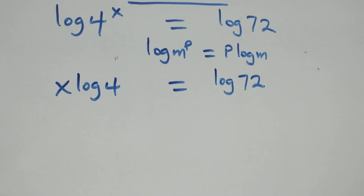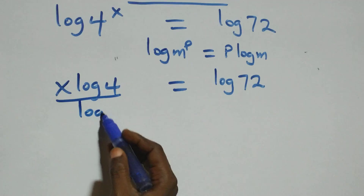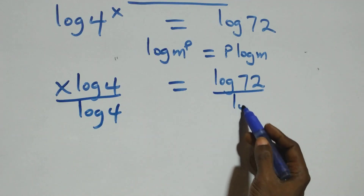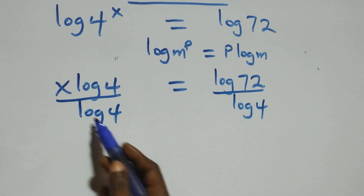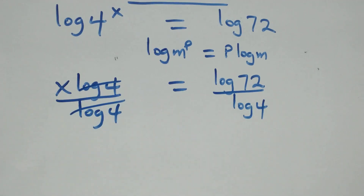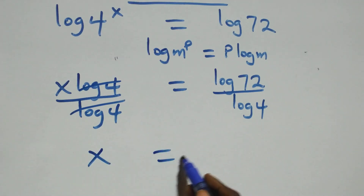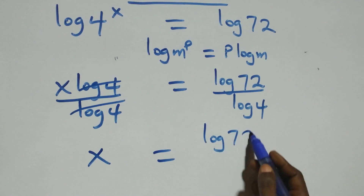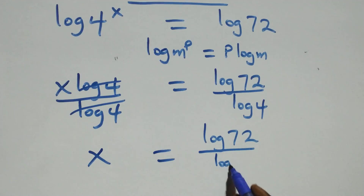Then here, we divide both sides by log 4. We also divide this side by log 4, which implies log 4 cancels each other. And we have x equals to log 72 over log 4.